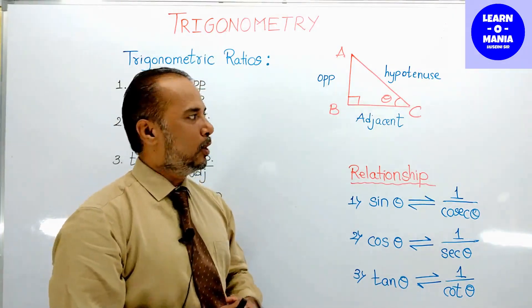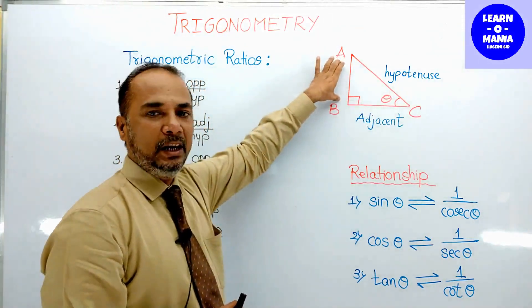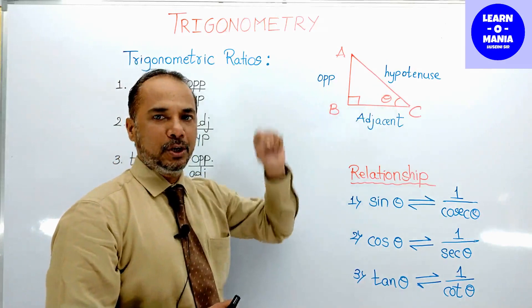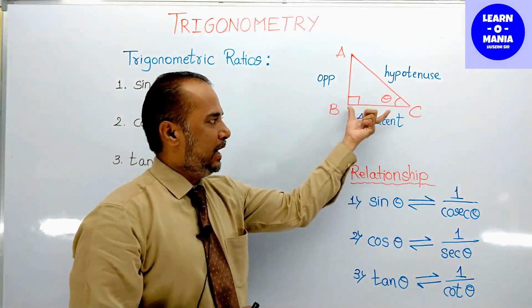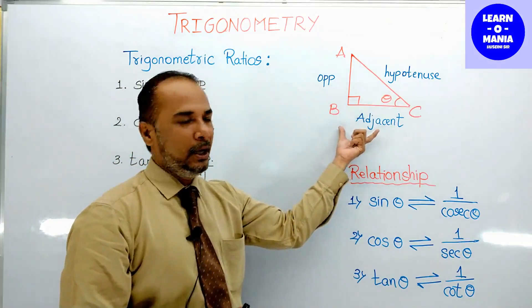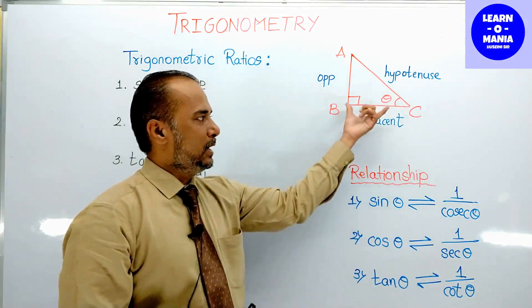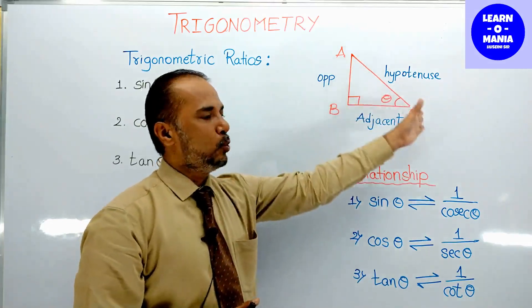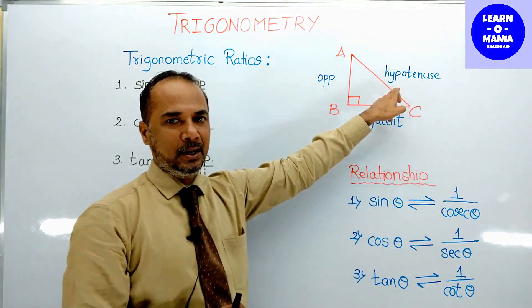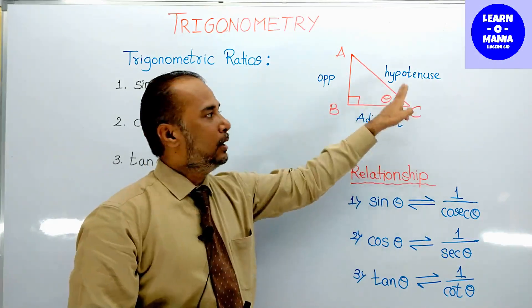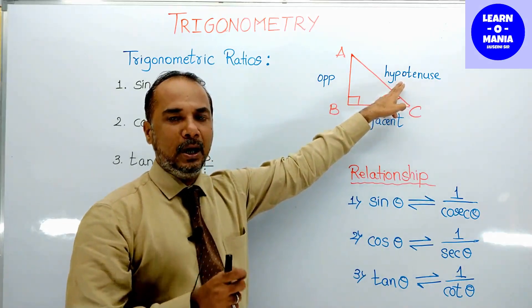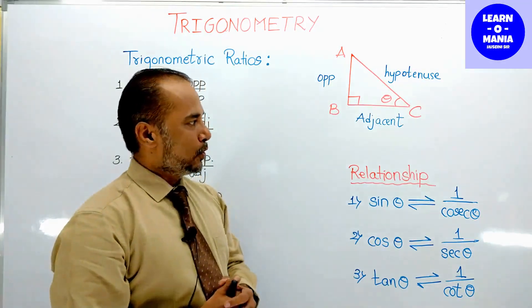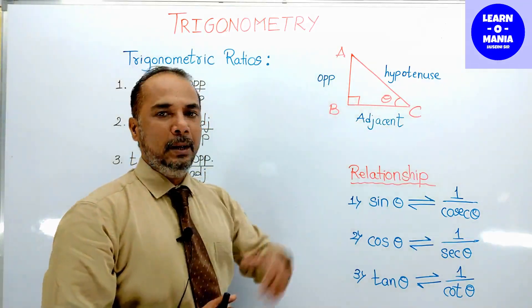With reference to angle C, compared to side AB, we will say AB is the opposite side — which is opposite to angle C. Side BC is the adjacent side, because that side is next to angle C. The side in front of the right angle is called the hypotenuse.